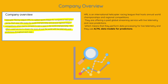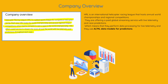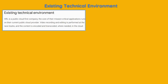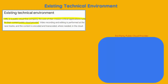This means that they perform data processing for live telemetry and they use AI/ML data models for predictions. Moving on with their existing technical environment: HRL is a public cloud-first company, and the core of their mission-critical applications runs on their current public cloud provider — other than Google Cloud — to run its essential applications. Video recording and editing is performed at the racetracks, and the content is encoded and transcoded where needed in the cloud.